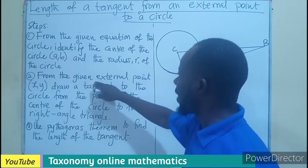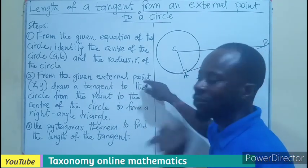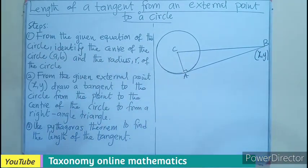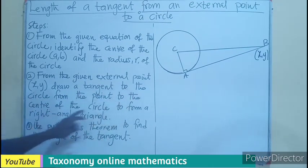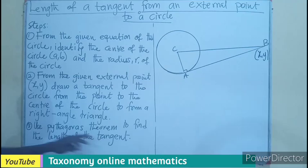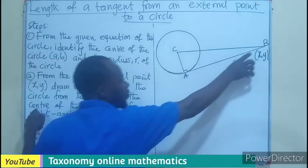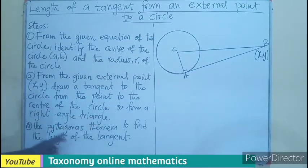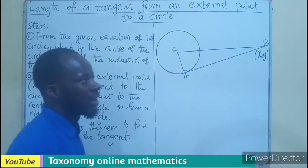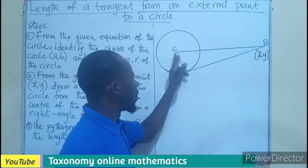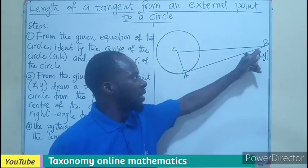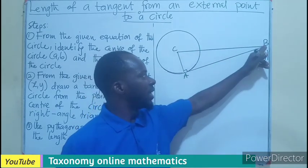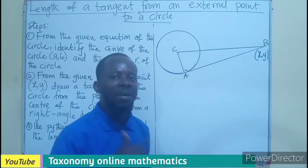Step two: from the given external point X,Y, draw a tangent to the circle from the point to the center to form a right angle triangle. We already know that a tangent meets a radius at a right angle. Every tangent drawn to meet the radius forms a right angle there. So if you join the three points to form a triangle, that becomes a right angle triangle.